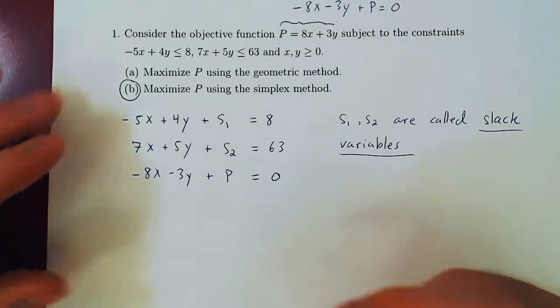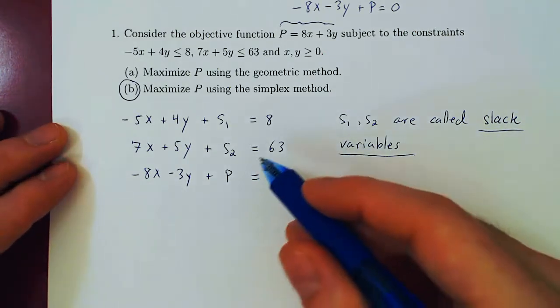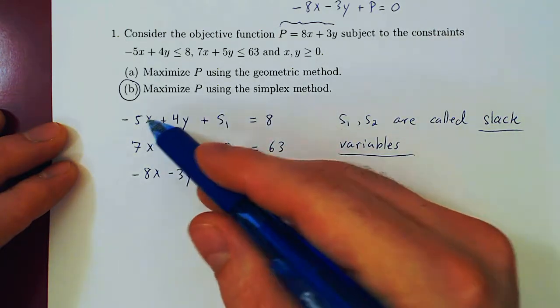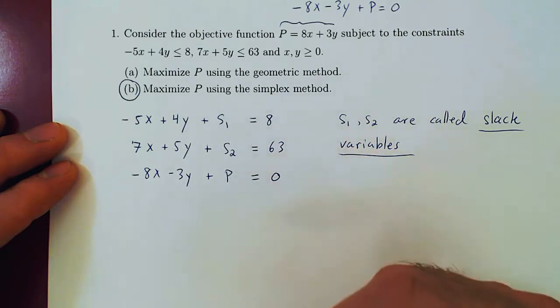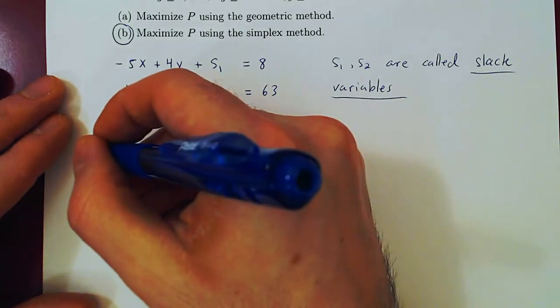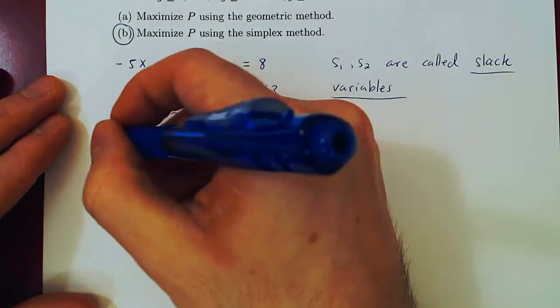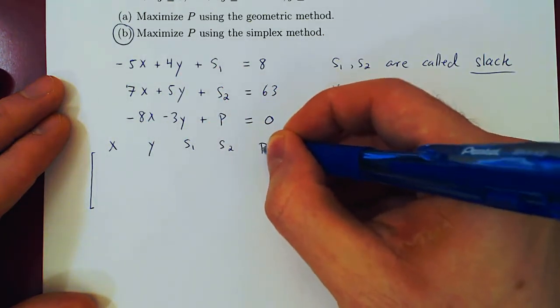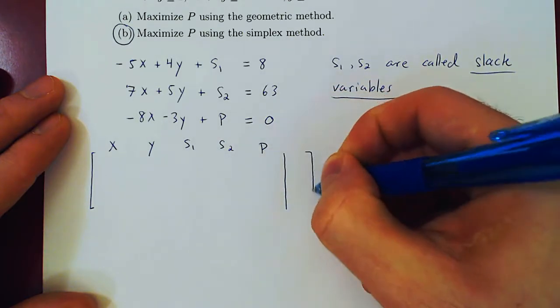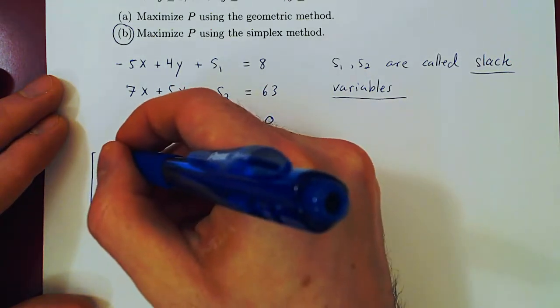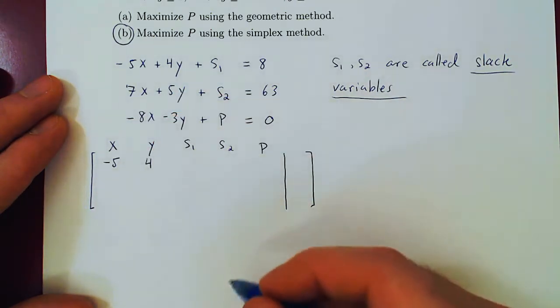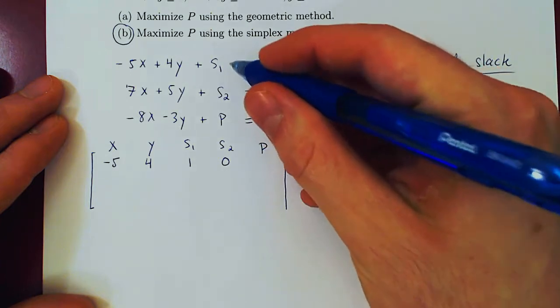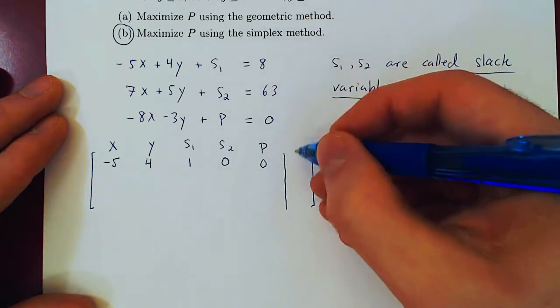Step two is complete. Now we will form the so-called simplex matrix. Because what we have now is a linear system in three equations but now five variables: x, y, s1, s2, and p. So first equation, negative 5 times x, positive 4 times y, plus 1 times s1. There is no s2 in the first equation, so it has a coefficient of zero. There is no p. Same thing. And the result is equal to vertical bar, positive 8.